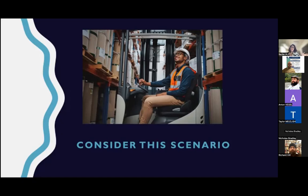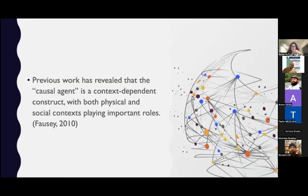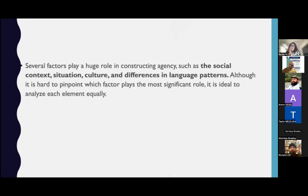When we see this kind of incident and try to describe it to someone else, how do we describe it? Do we say the forklift operator broke the crystals? Or do we say the crystal broke? Or he made a tight turn and the crystal broke? It's very important how we describe the situation — do we use agentive sentences or non-agentive expressions? Previous work by Fausey and Boroditsky revealed that the causal agent is a context-dependent construct with both physical and social context playing important roles. Other factors include situation, culture, and differences in language patterns, and although it's hard to pinpoint which factor plays the most significant role, it's ideal to analyze each element equally.